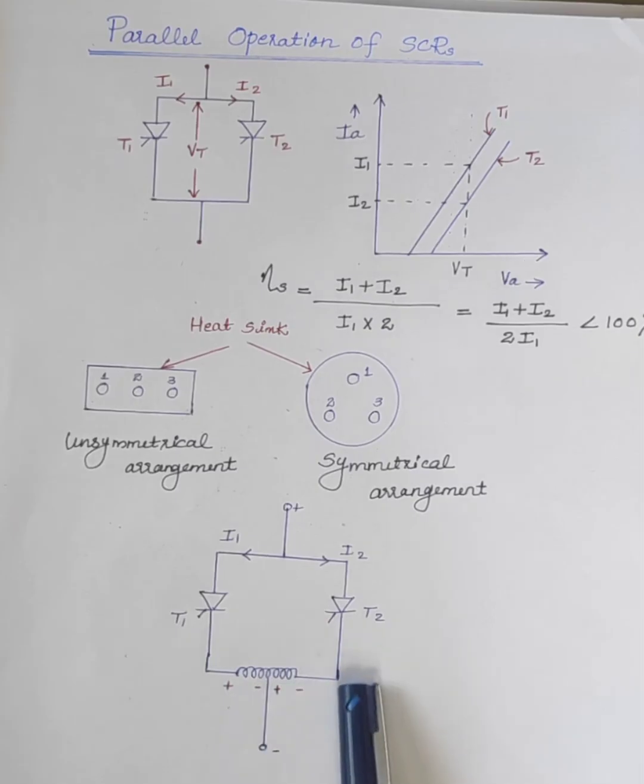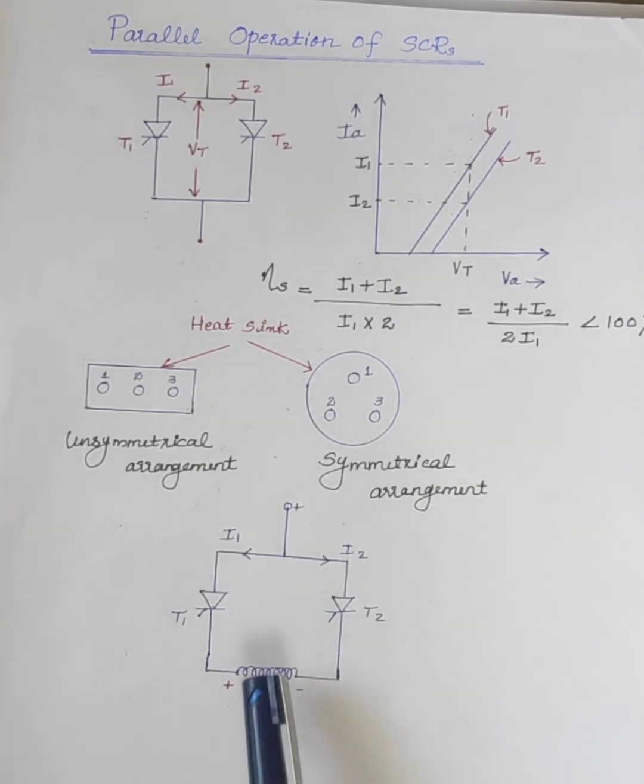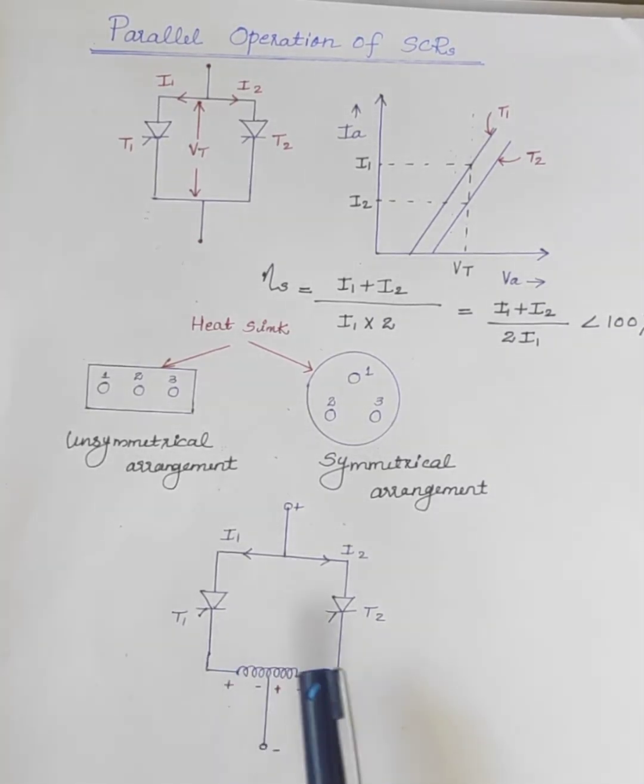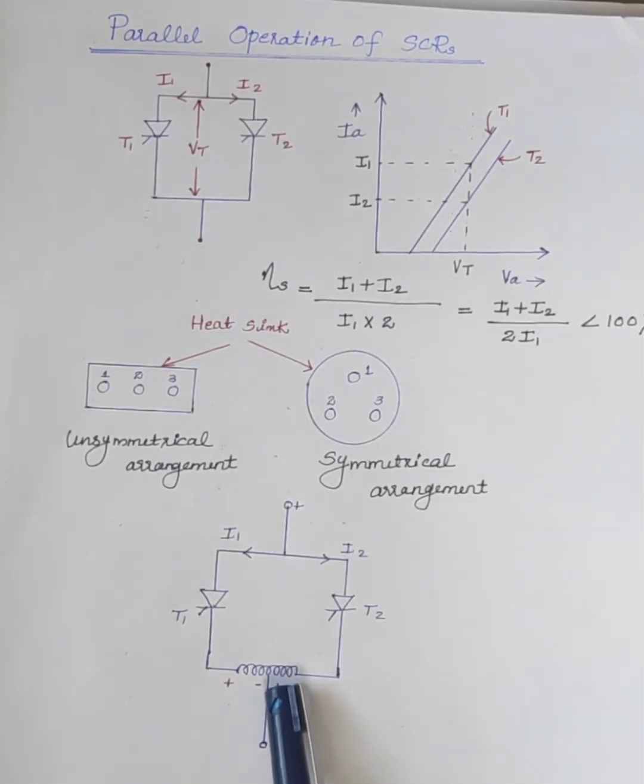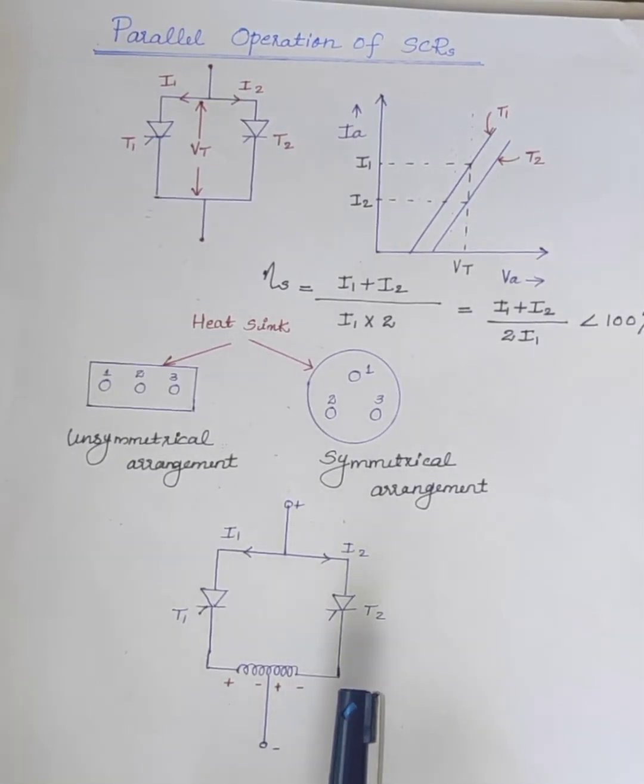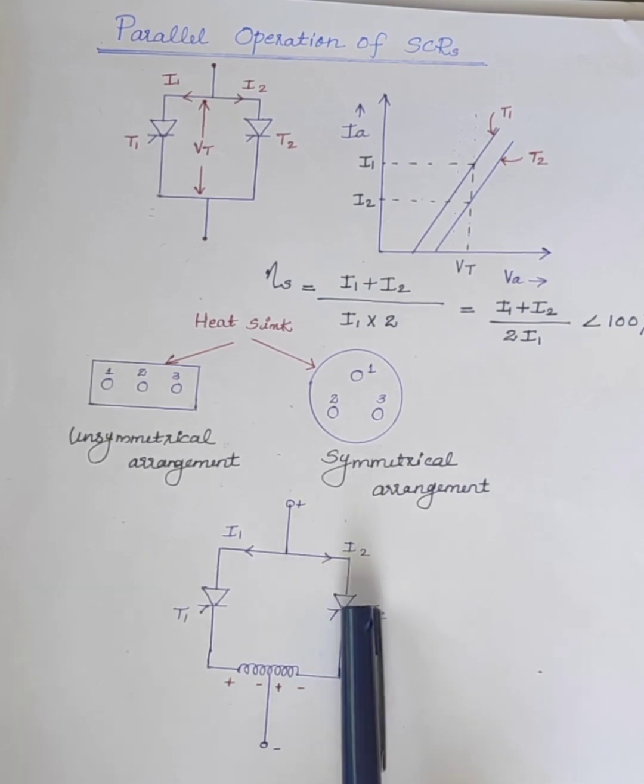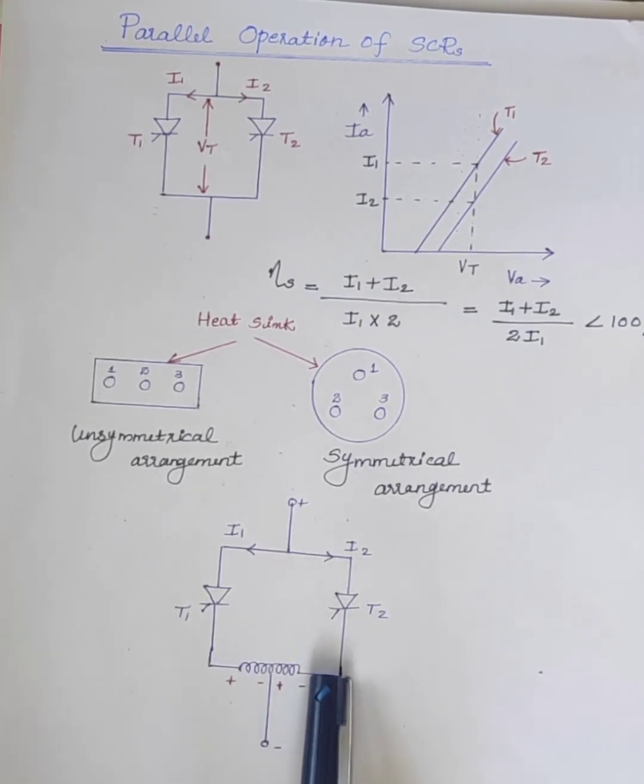If I1 is greater than I2, then there will be a resultant flux. This flux induces EMF in coil 1 and 2. Hence, current in path 1 is opposed and current in path 2 is aided by the induced EMF, thus reducing the current difference in the two paths.